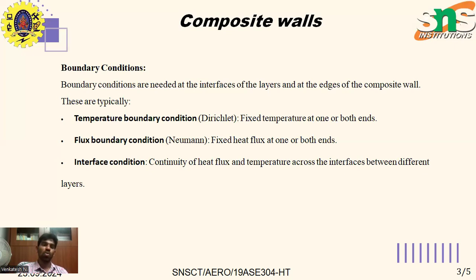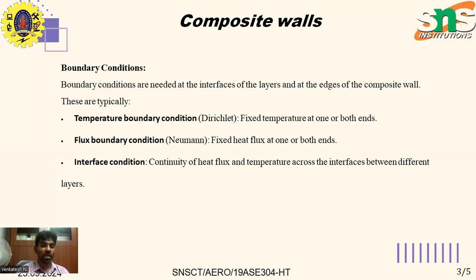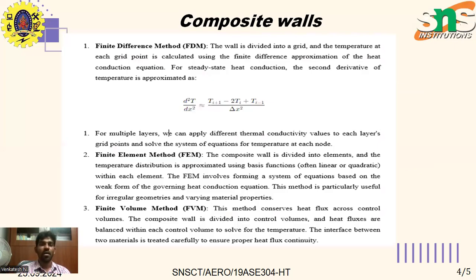Composite wall material consists of two or more different types of metals joined together, providing higher strength compared to individual materials while also being more cost-effective. The production of composite wall materials has a comparatively lower production cost. The composite wall can be analyzed using the finite difference method, finite element method, and finite volume method.